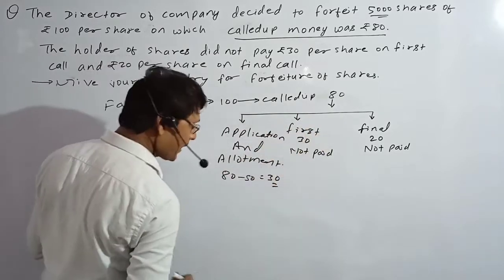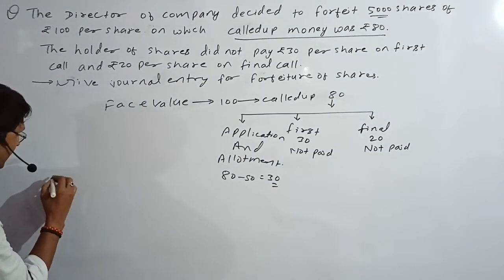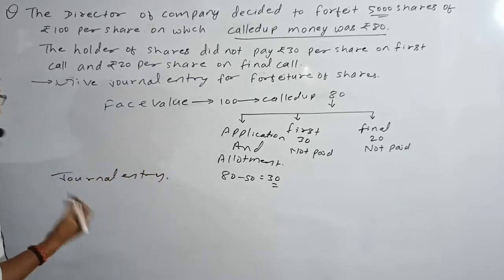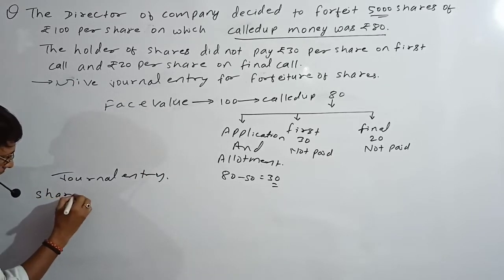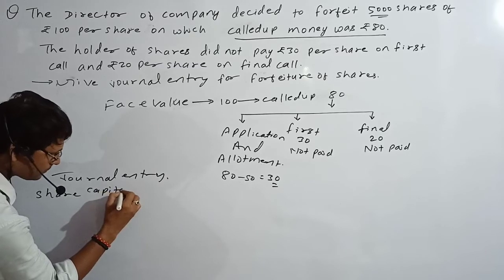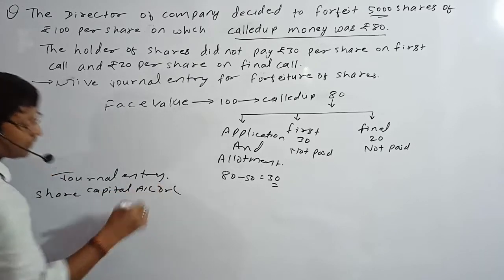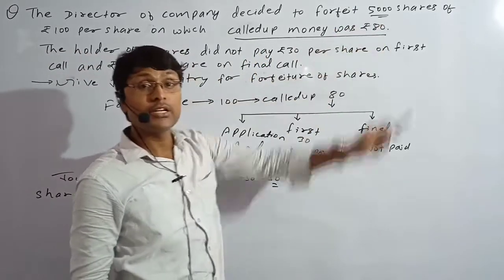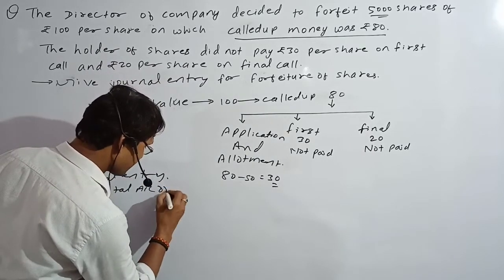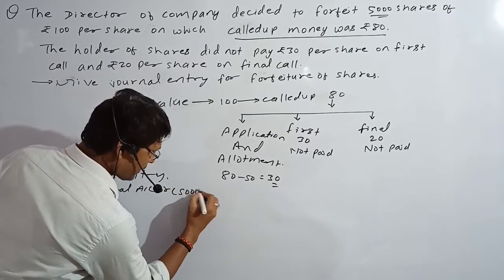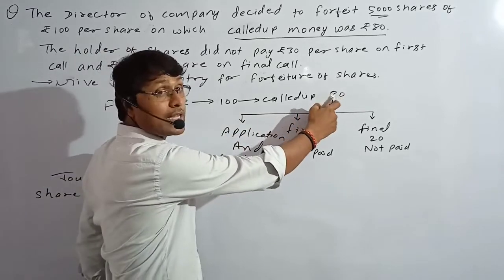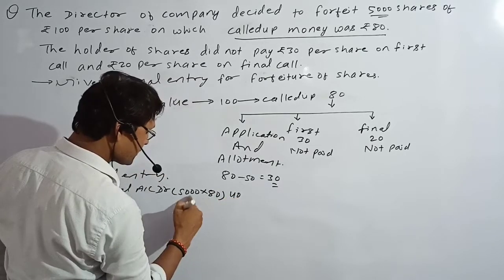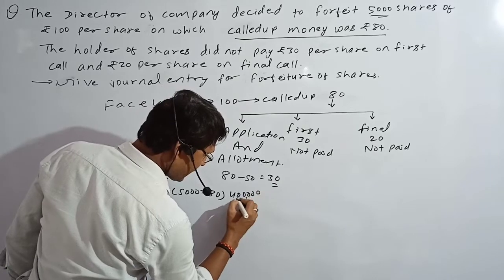We have to understand it completely. Now see — it's the journal entry. Share Capital Account will be debited. How much will the debit be? Number of shares × called-up amount. Number of shares: 5,000. Called-up amount: ₹80. Multiply both: 5,000 × 80 = ₹4,00,000.